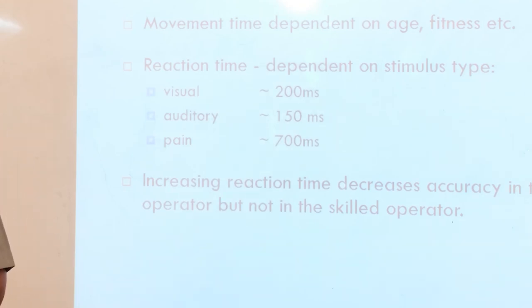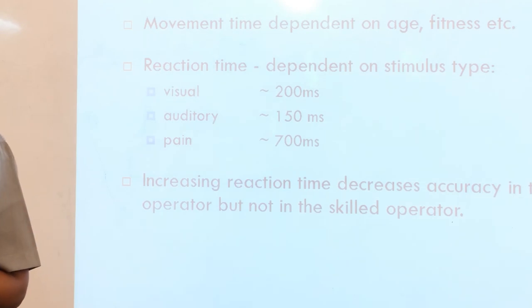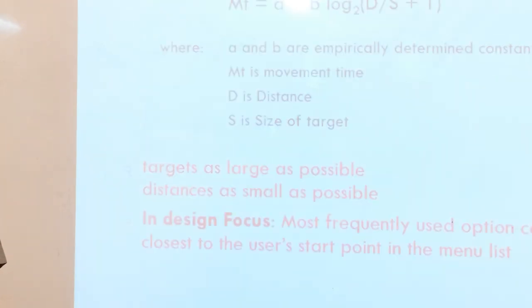Fitts' law describes formulas to calculate this. Targets should be as large as possible, distances as small as possible. In design focus, most frequently used options can be placed closest to the user's start position in the menu list.